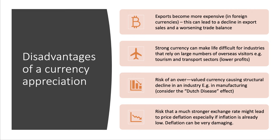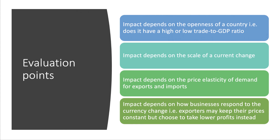The Australian dollar has been particularly strong in recent years, and that's one factor behind the effective end of the Australian car-making sector. There's also a risk that a currency appreciation can lead to deflation — if a country is growing but inflation is below 1%, an appreciation could have deflationary effects, and deflation can be very damaging to macroeconomic performance.